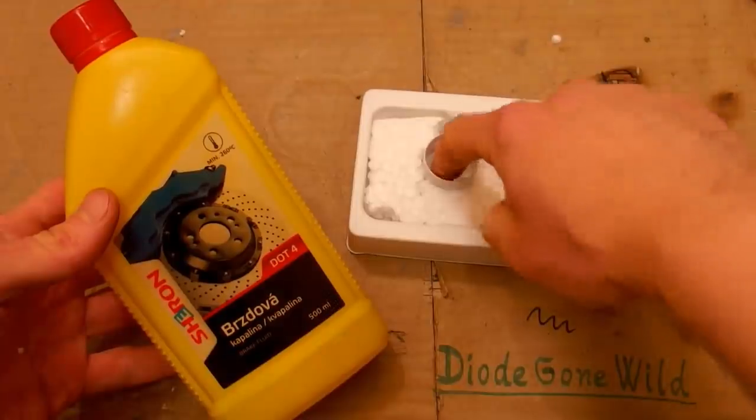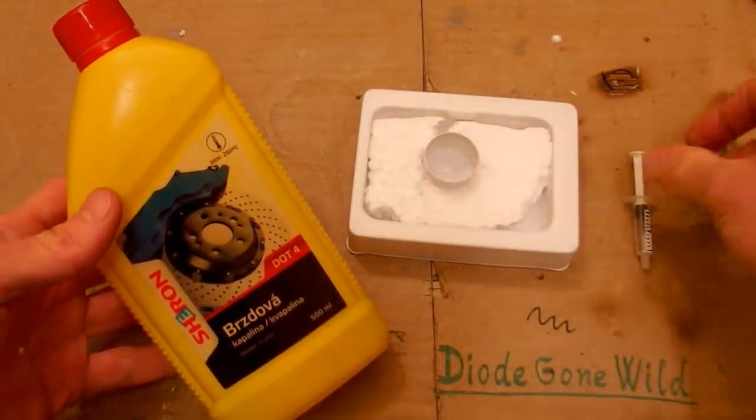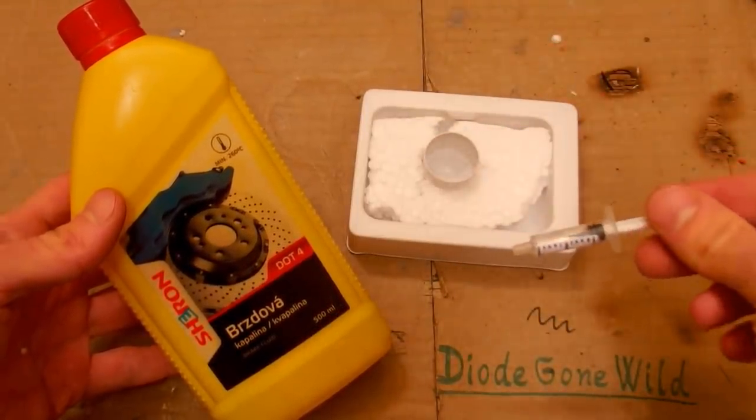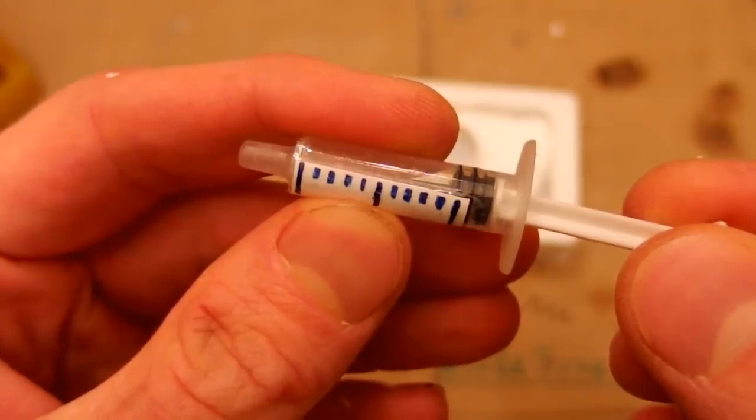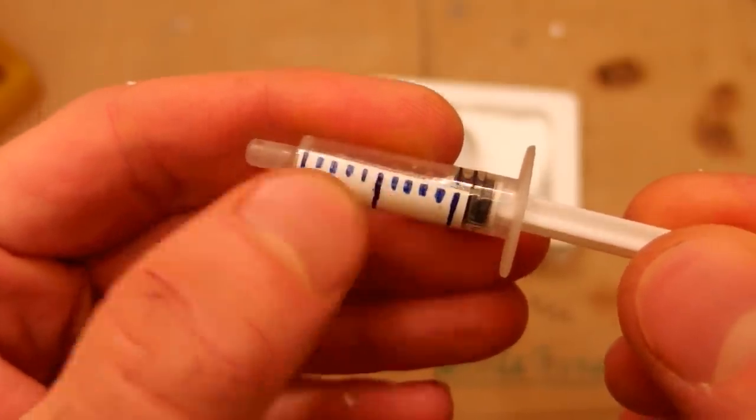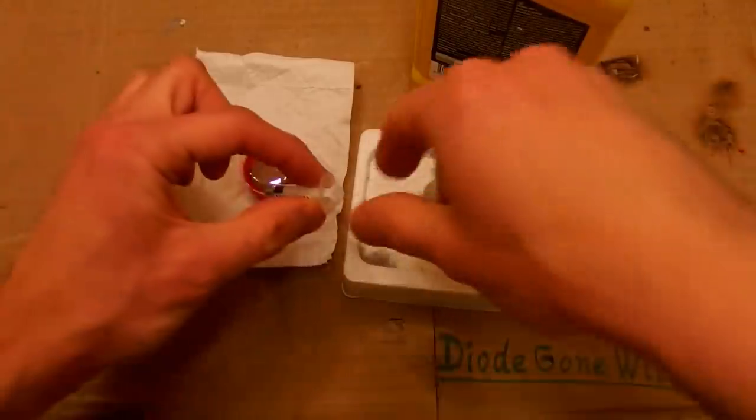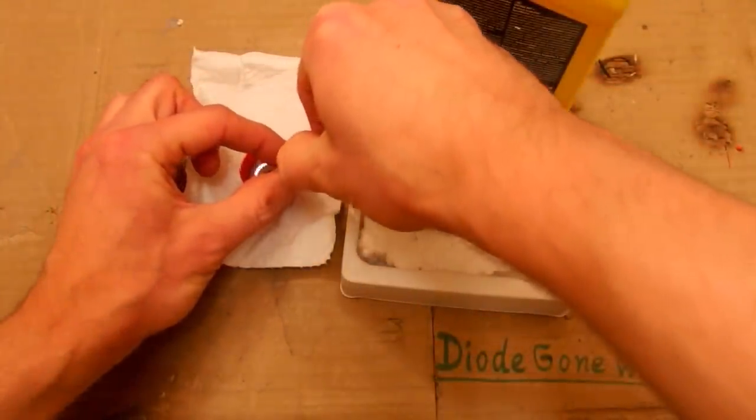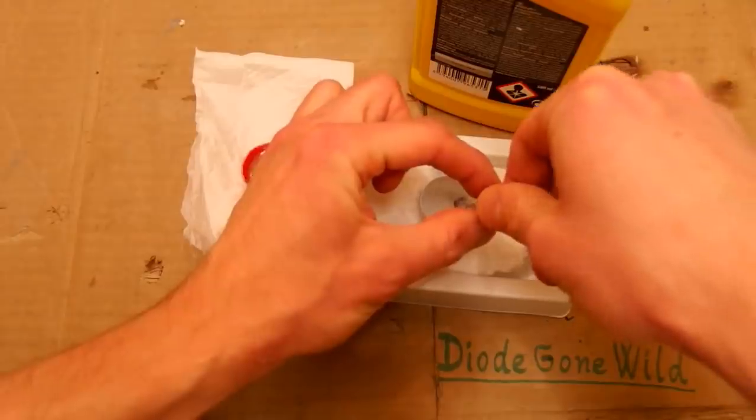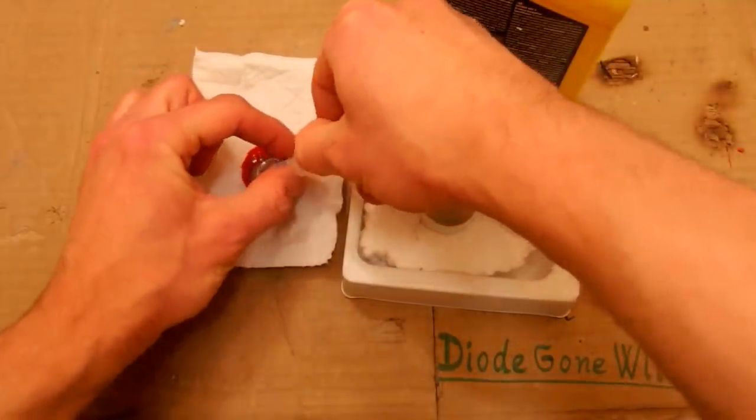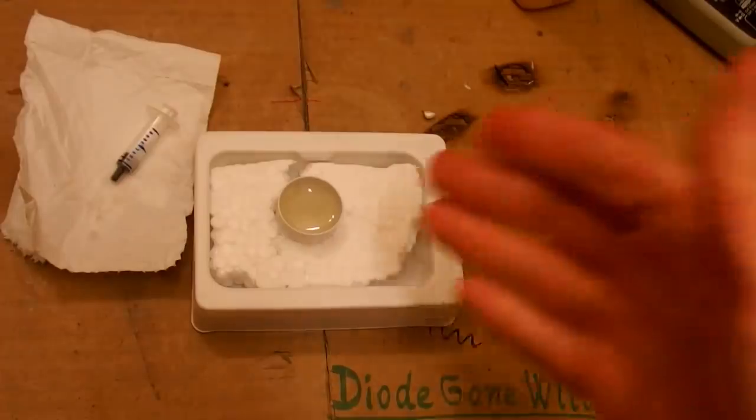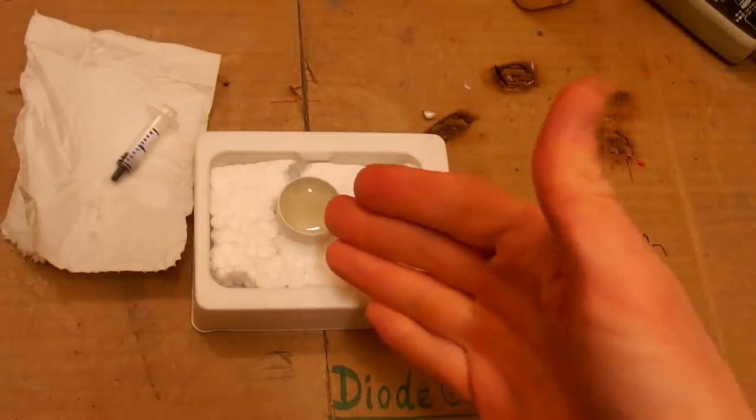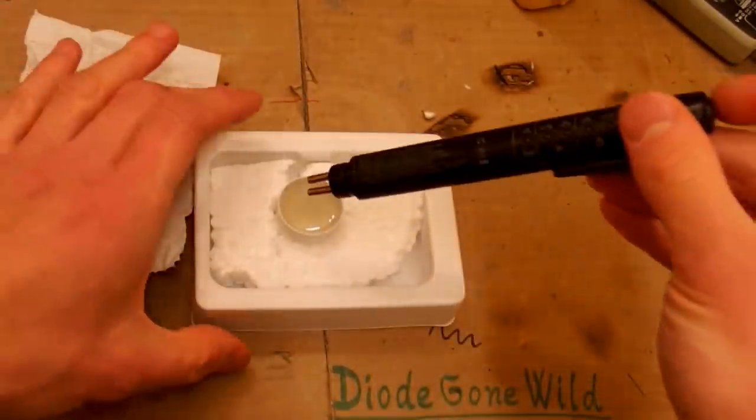But now of course let's try it with a fresh brake fluid. I will put some into this container and try to measure it and then I can add a little bit of water to see the effect. I have a roughly calibrated syringe here with 10 divisions on it. So let's try to put 10 syringes into here.